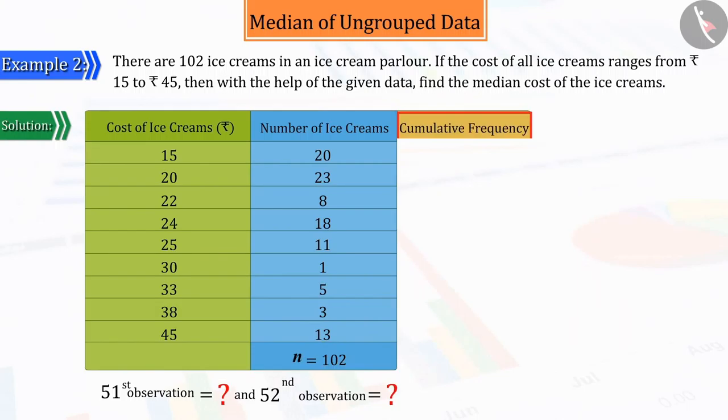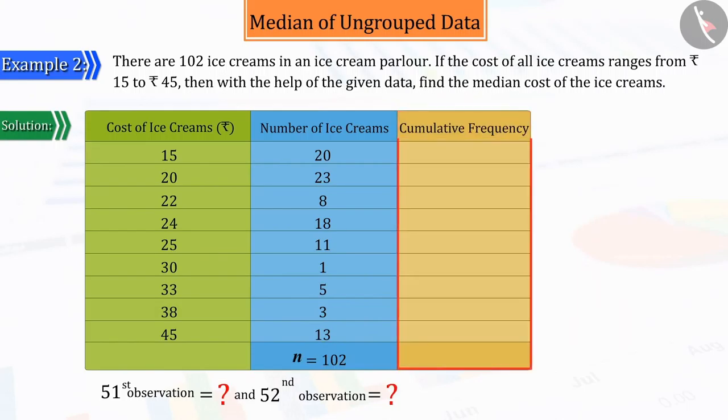Let's see. For this, let's create a new column. In the first line, let's group the ice creams that are priced up to Rs. 15. They are 20 in number.